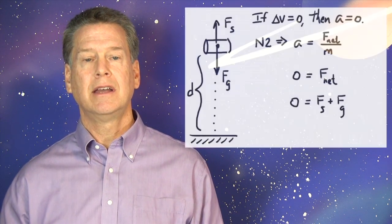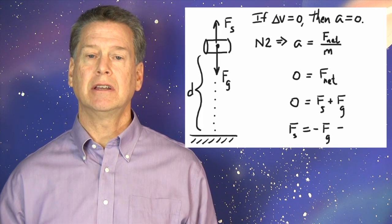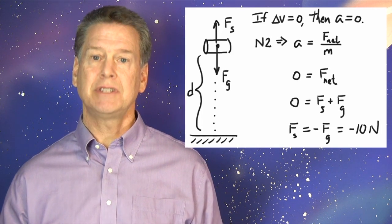But if the net force is zero, and gravity still acts, then the support force must be just the negative of the force of gravity. F sub S equals minus F sub G equals negative 10 newtons.